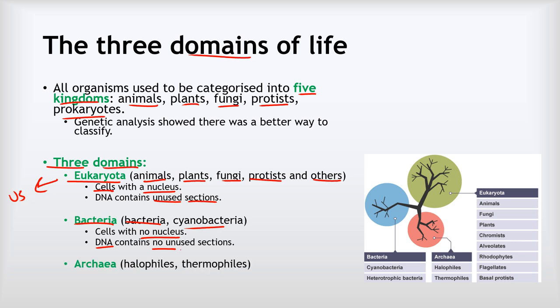The last group is the Archaea. These used to be considered bacteria, but we now know they're very different from genetic analysis. These are things like halophiles and thermophiles. You've got lots of archaea in your gut—archaea are the main microorganisms that cause methane to be produced when you fart. Their cells have no nucleus, but like Eukaryota, they have DNA with unused sections. In terms of cell structure, they're somewhere between bacteria and eukaryota cells.